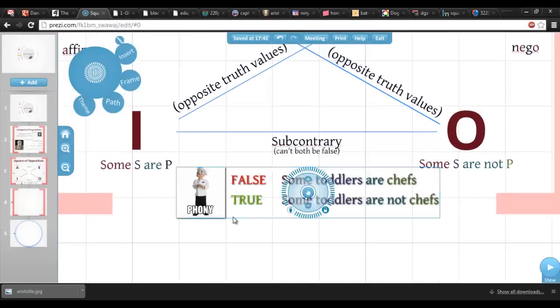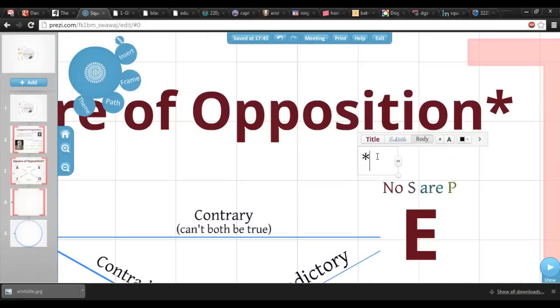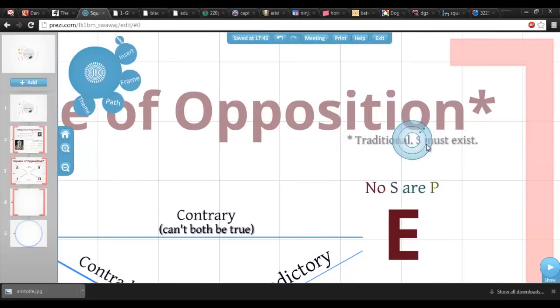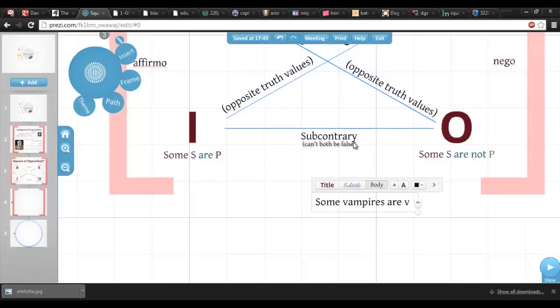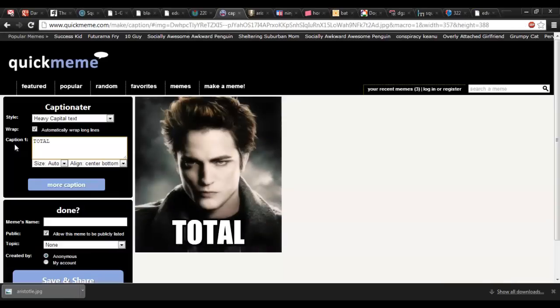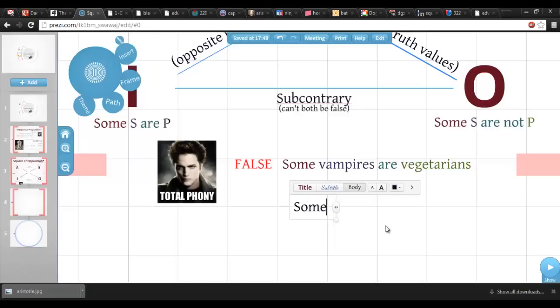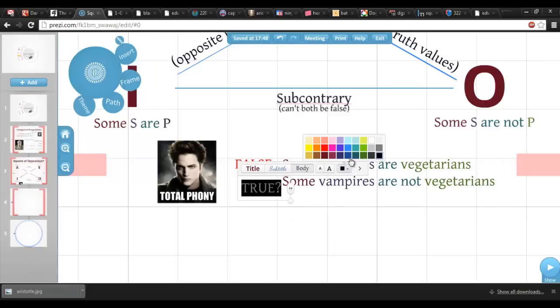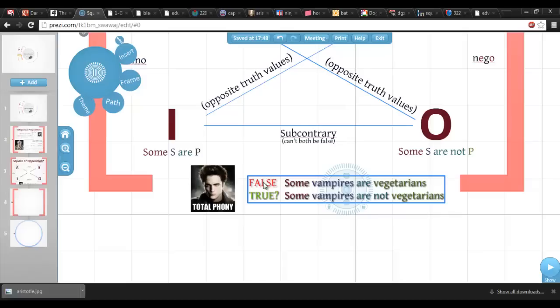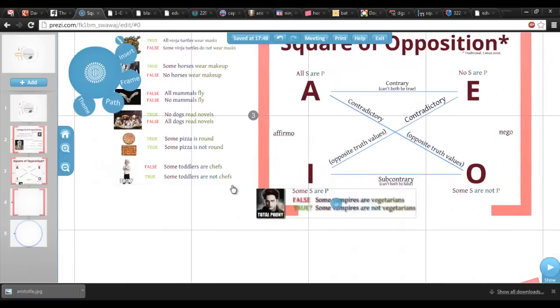I have to pause here and put a big asterisk on all of this, because these inferences only work if the subject term actually refers to something that exists. If the subject doesn't exist, then we're not allowed to make these inferences. For instance, consider the sentence, some vampires are vegetarians. This sentence is pretty clearly false, but by the subcontrary relation, that would make the corresponding O sentence true, meaning that some vampires are not vegetarians. It's strange to say that this is true because vampires don't exist, so it's strange to say that anything is true of them. The point is that the square of opposition only works for talking about real things that actually exist and have properties.